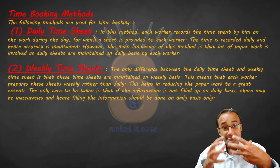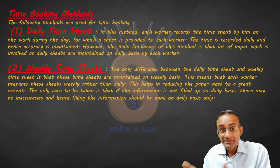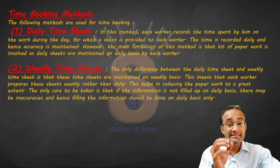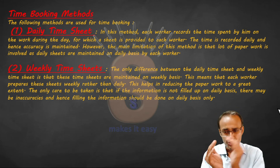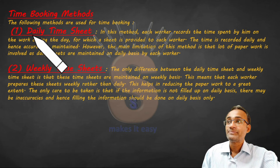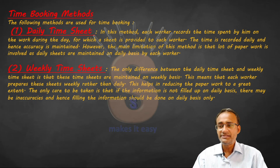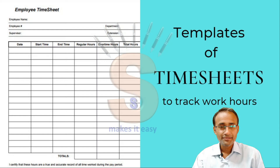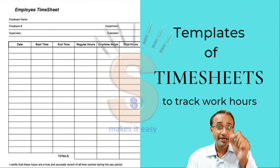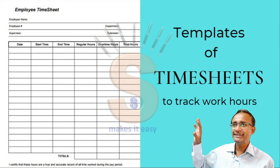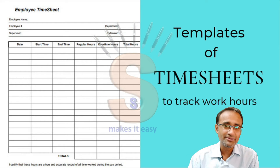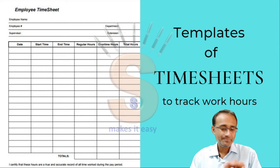Now, time booking methods. There are manual and mechanical methods. What are the time booking methods? Again, this depends on the organization. For a small organization, you can use a time sheet. A time sheet shows you a schedule — like a timetable showing which lecture is on Monday, which on Tuesday. A time sheet can be daily — recording when the laborer came and when he left.